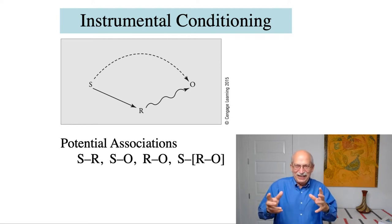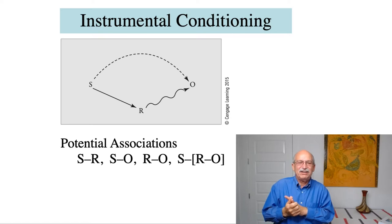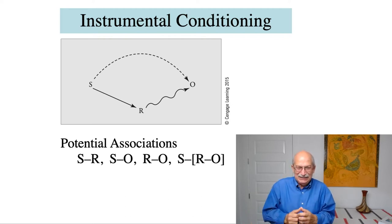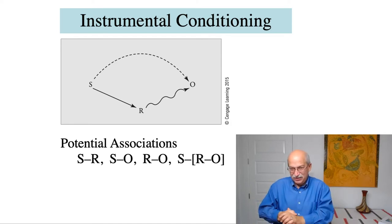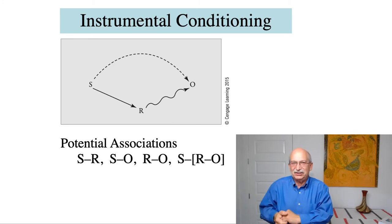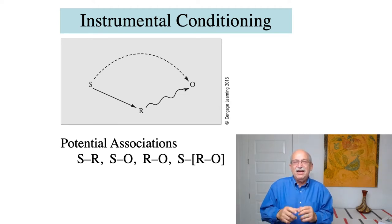It turns out these three elements can be combined, and there are various associations that can be established among them. We've talked about the SR association — that's Thorndike's law of effect. There's also an association that can become established between the stimulus S and the reinforcer: the SO association, which we'll spend a lot of time on today. There is a possible association between the response and the reinforcer, the RO association. And then there is a hierarchical association whereby S comes to activate the RO association. The main point is that instrumental conditioning involves multiple associations, and there is evidence for every one of them — it is multiply determined.